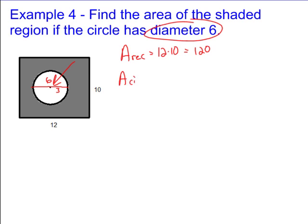And so the area of your circle is just going to be pi times the radius squared, right? Pi r squared. Radius is 3, so 3 squared is 9, so you end up with 9 pi. So the area of the shaded region is the area of the rectangle minus the area of the circle. So it's 120 minus 9 pi.